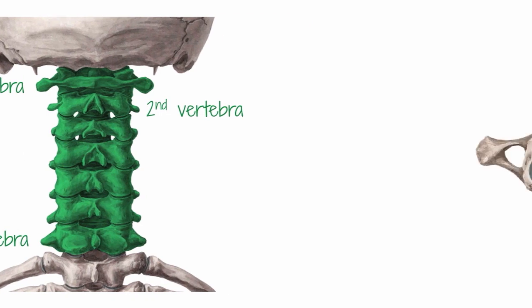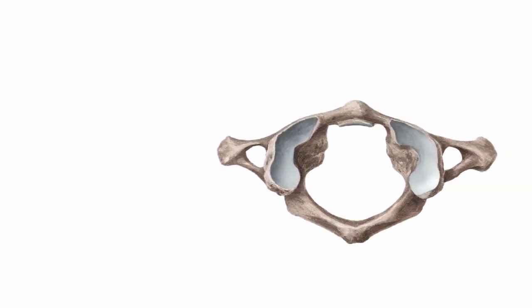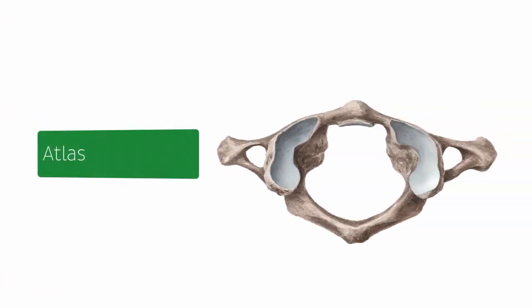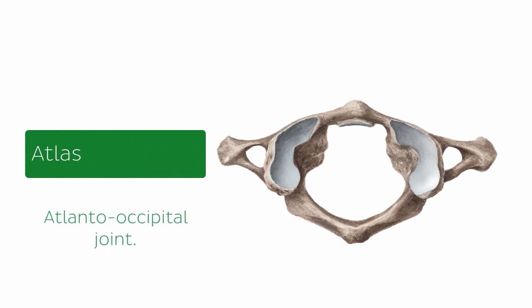We're going to start off with the very first vertebra here on the screen. This is known as the atlas, and here we're looking at the entire bone from a superior view. This is the first cervical vertebra and the first vertebra in the spinal column. It is unique in that it lacks a body and a spinous process, and it is the only vertebra that articulates with the skull, forming the atlantooccipital joint.